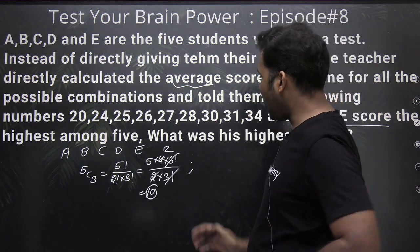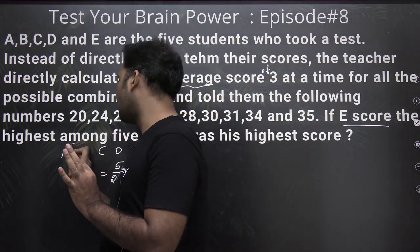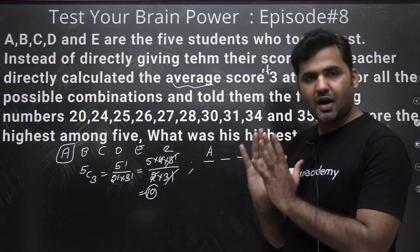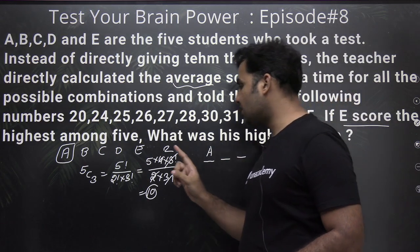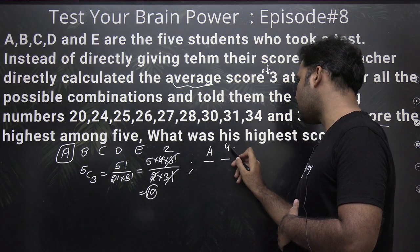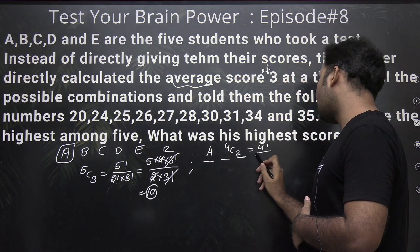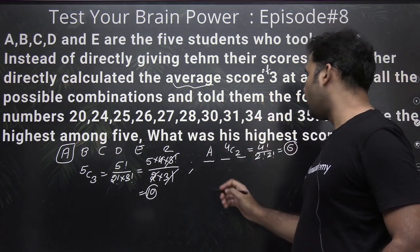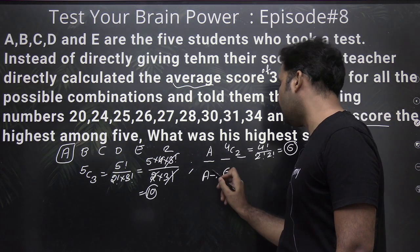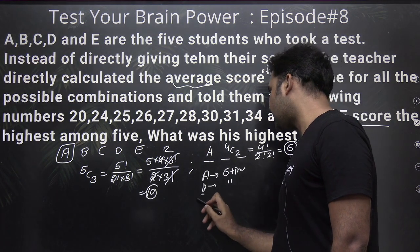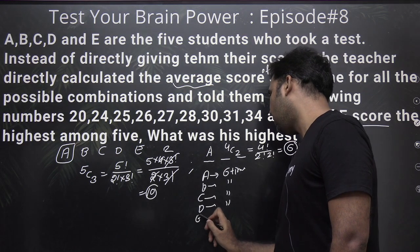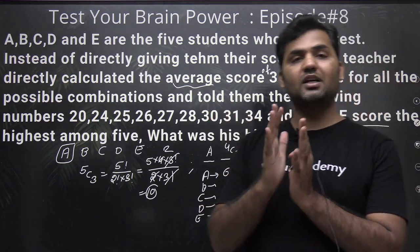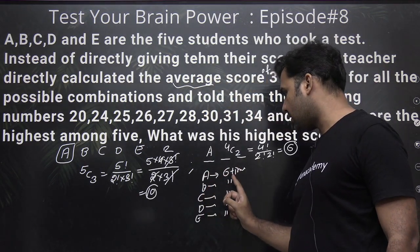Out of these ten combinations, in how many will a particular student's score — say A — be counted? If A is definitely part of the team, I need to select two more from the remaining four, which can be done in 4C2 ways. 4C2 equals four factorial divided by two factorial times two factorial, which equals six. So out of all ten combinations, A will be part of six combinations, counted six times. Similarly, B, C, D and E will each also be counted six times.